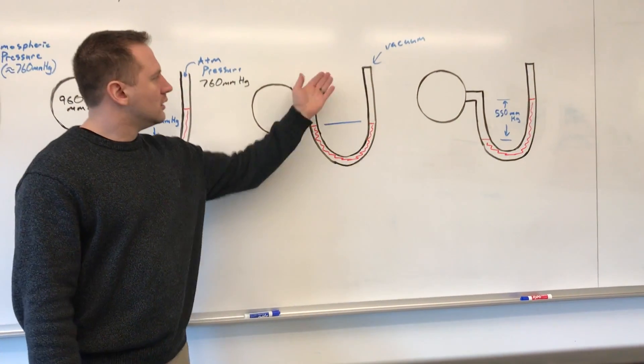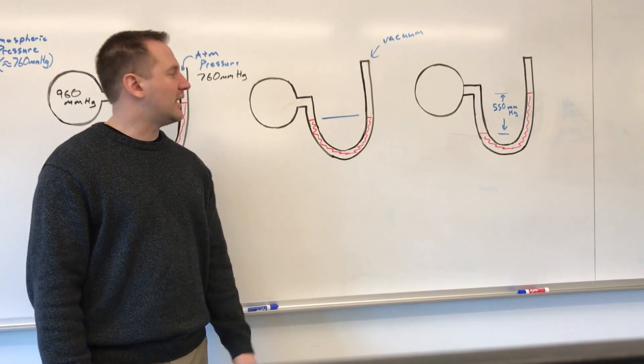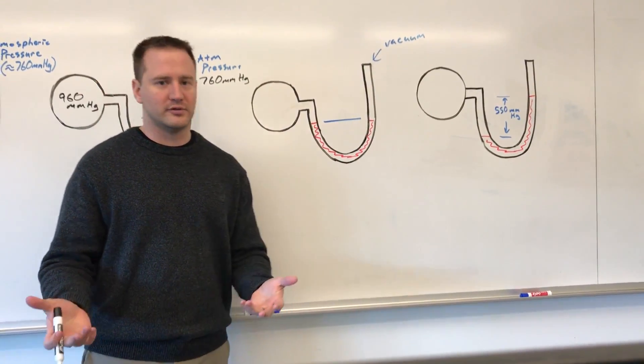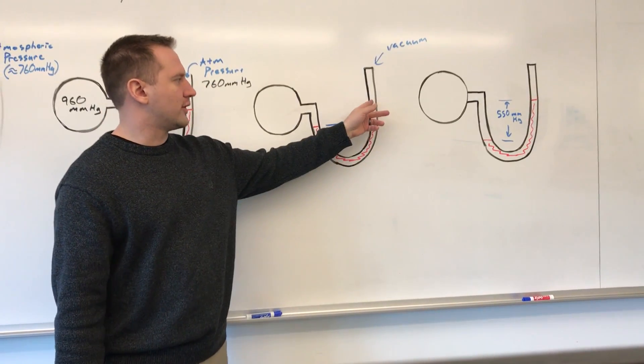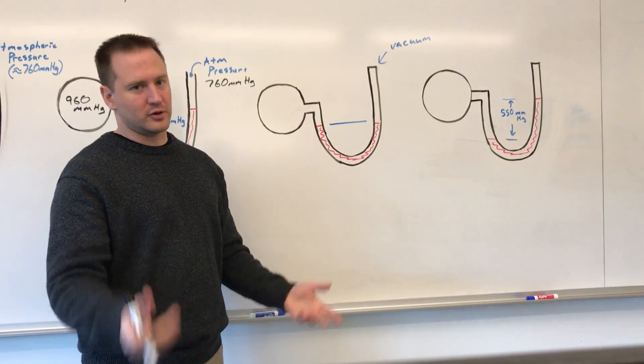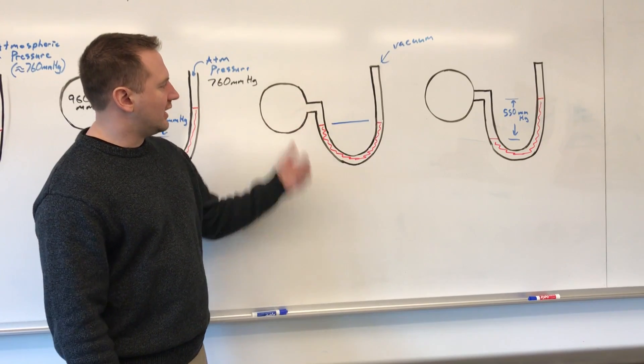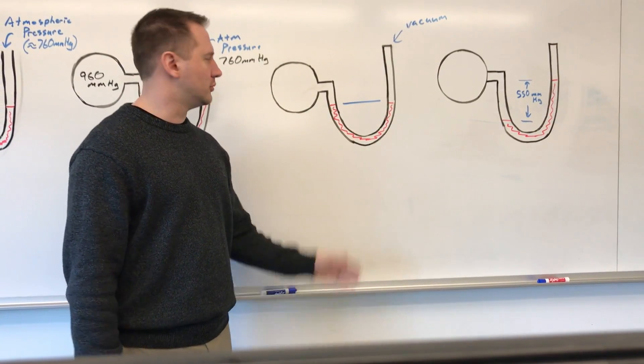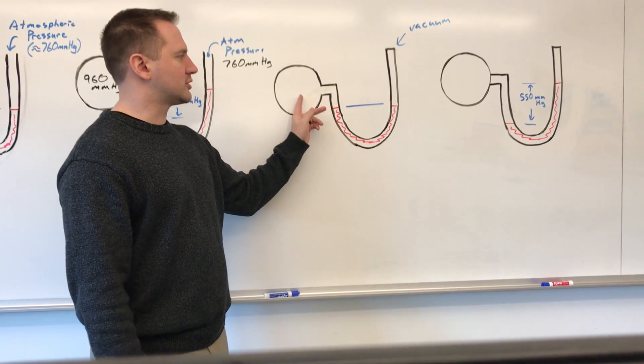Now with a closed-ended manometer, you have a vacuum in one end where all the air is pumped out of the tube before the mercury is inserted. You have no pressure on this side, so zero millimeters of mercury. On this side, since this is even, this is a completely evacuated tube with just mercury, so there would be no pressure in here as well.